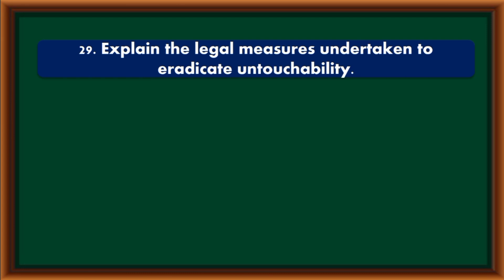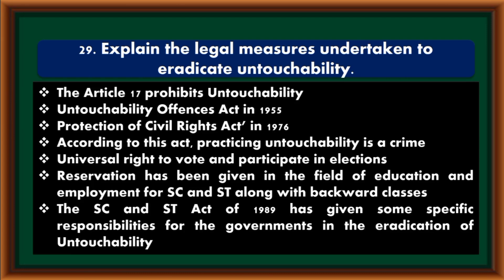Explain the legal measures undertaken to eradicate untouchability. Article 17 prohibits untouchability. The Untouchability Offences Act of 1955 and the Protection of Civil Rights Act of 1976 make practicing untouchability a crime. Universal right to vote and participate in elections. Reservation has been given in education and employment for SC, ST, and backward classes. The SC and ST Act of 1989 has given specific responsibilities to governments for the eradication of untouchability.